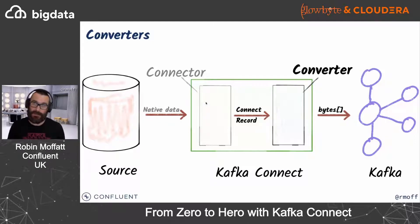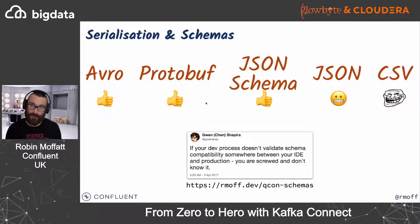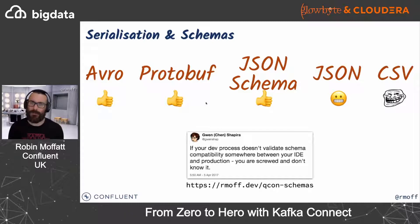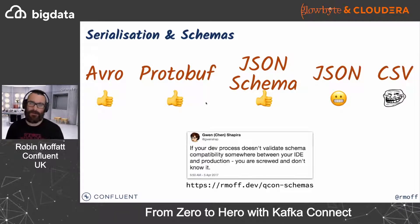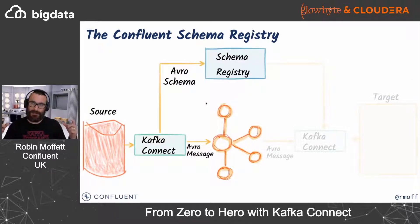We select a converter which takes the payload and schema representation and serializes it into a way we can store it in Kafka. This is a very important choice when writing a source connector — how am I going to serialize my data? If you're using a sink connector you have to go with whatever choice the source connector author made. A converter will take the payload and schema and serialize it using Avro, Protocol Buffers, or JSON Schema — using the schema registry to store that schema — and write the binary data onto the Kafka topic. We could serialize as JSON or CSV, but CSV throws away the schema, which is usually not what we want.